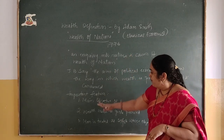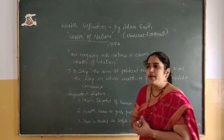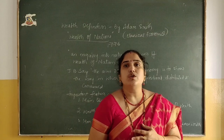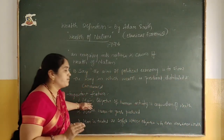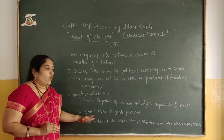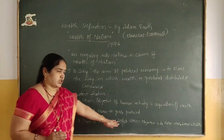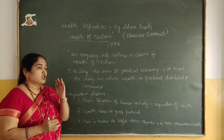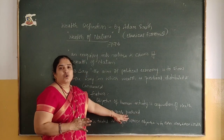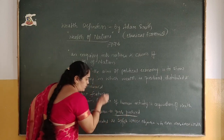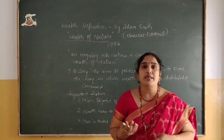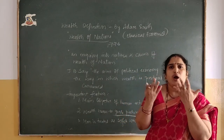The main objective of human activity according to the wealth definition is acquisition of wealth. Why are people earning money and engaged in economic activity? It is only to earn money — money is also in the form of wealth. We are producing goods only to earn wealth. Man is treated as selfish, whose objective is to earn more and more wealth. Every person is putting effort to earn more and more. Once we earn a little money, we try to work harder to earn more — that is why man is treated as selfish.